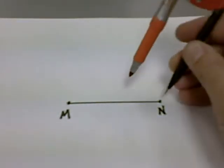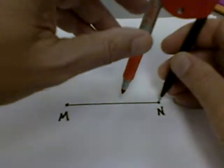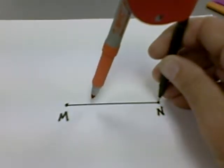To begin, I'm going to place my compass on point N, one of the two endpoints—doesn't matter which one you choose—and open my compass up more than half the length of the segment.